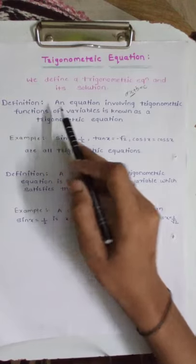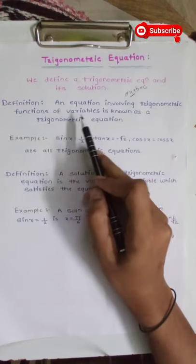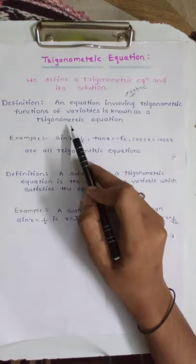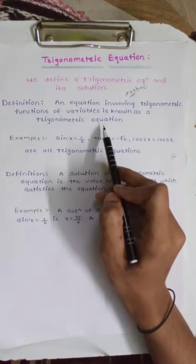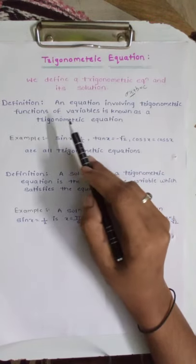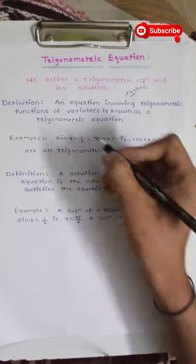The definition of the trigonometric equation is that an equation involving a trigonometric function of a variable is known as a trigonometric equation. The trigonometric equation is a type of transcendental equation.